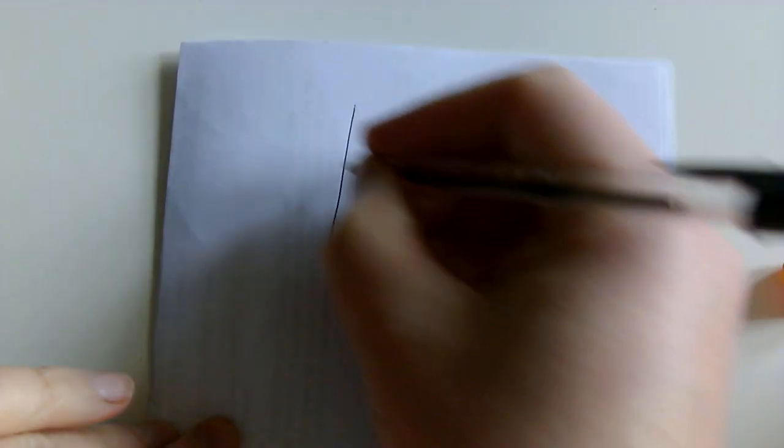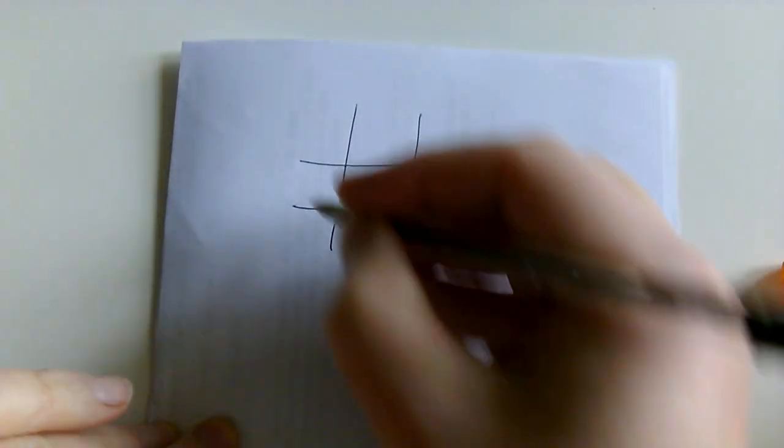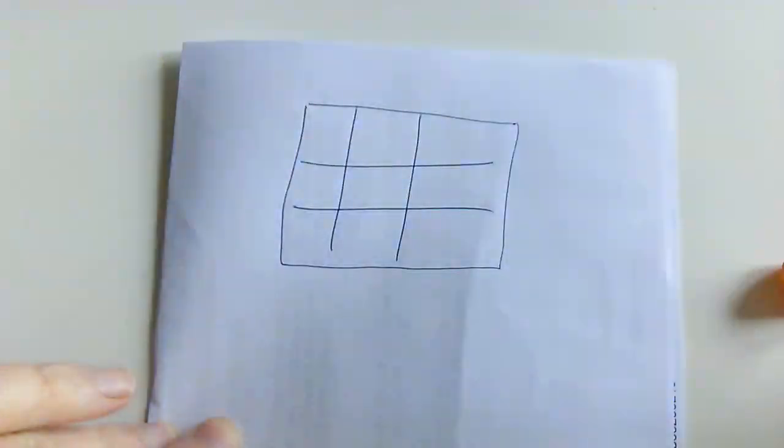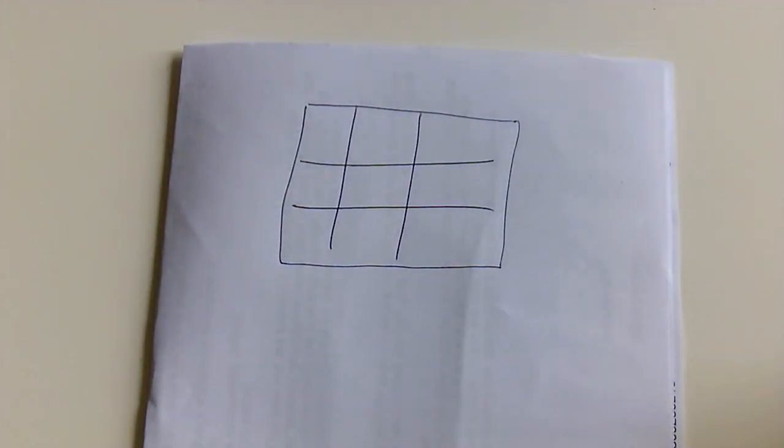Start off with the children, get them to draw a noughts and crosses grid, then get them to draw a box around the outside of there. And then, I'm using a 10-sided dice. You can make the game harder or easier by using a different dice.